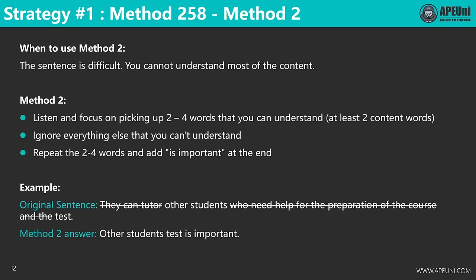Now let me explain in detail when and how to use Method 2. When you hear a sentence and find it very difficult, or you're too nervous and can't understand most of the content, quickly decide to use Method 2. When using Method 2, focus on picking up 2 to 4 words that you can understand. Don't panic — ignore everything you can't understand. Even when the sentence is hard, don't get carried away by difficult words. There will certainly be a few easy words you can pick up. Make sure you pick at least 2 content words — not function words like of, a, and, to, the.